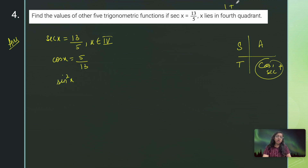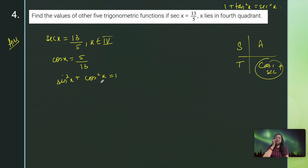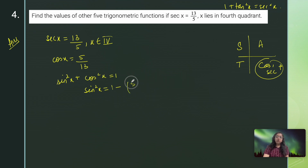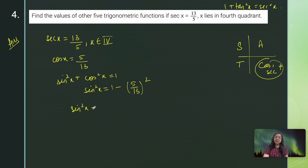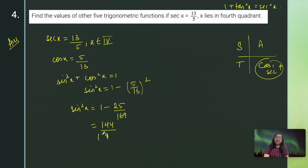Using sin²x + cos²x = 1, I get sin²x = 1 − (5/13)² = 1 − 25/169 = 144/169. So sin x = ±12/13. Since x is in the fourth quadrant where sin is negative, sin x = −12/13.